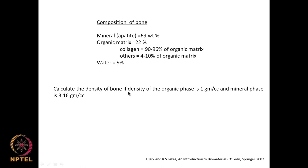Let us calculate the density of the bone. If the density of the organic material is 1 gram per cc and the mineral (hydroxyapatite) is 3.16 gram per cc, how do we do it? We can use the rule of mixtures.